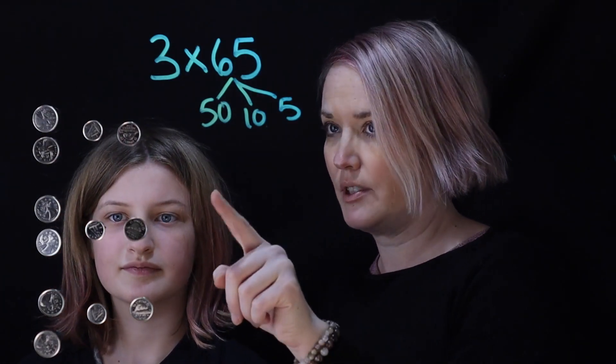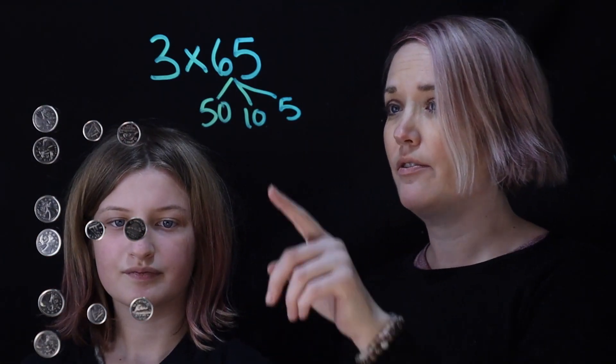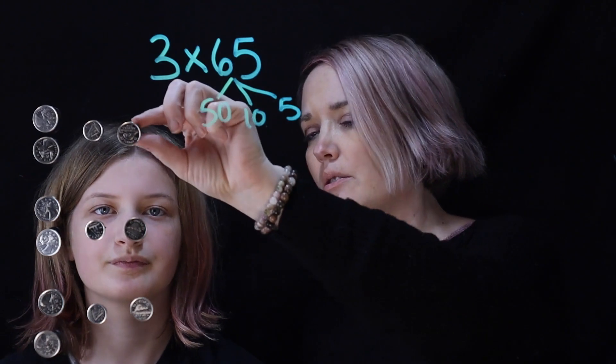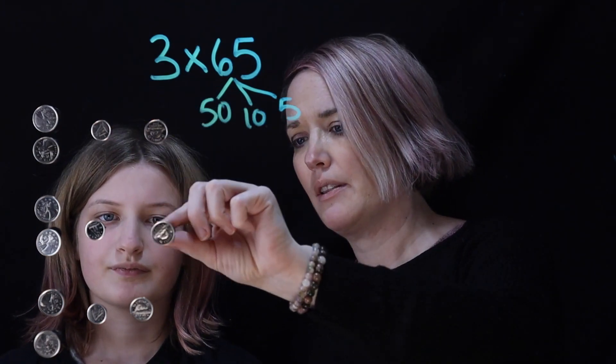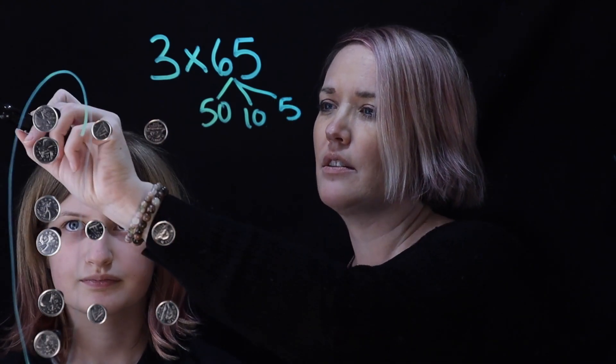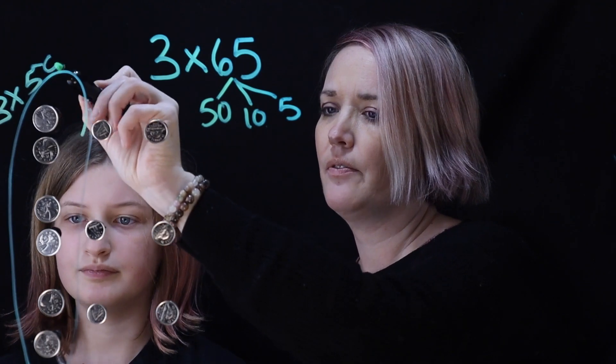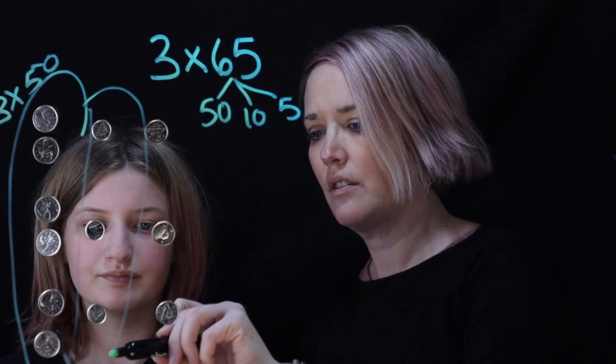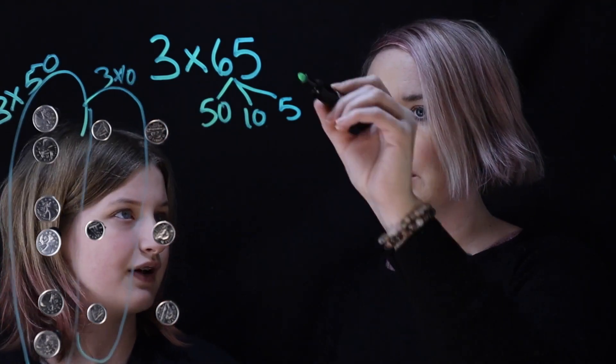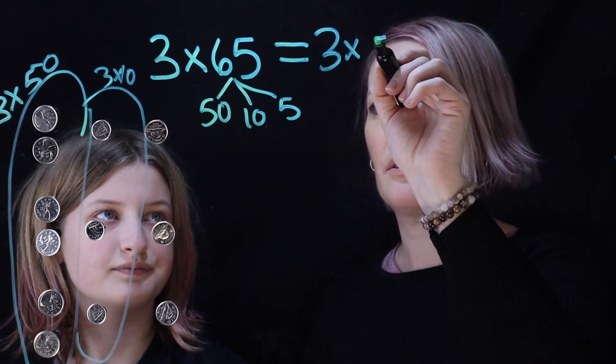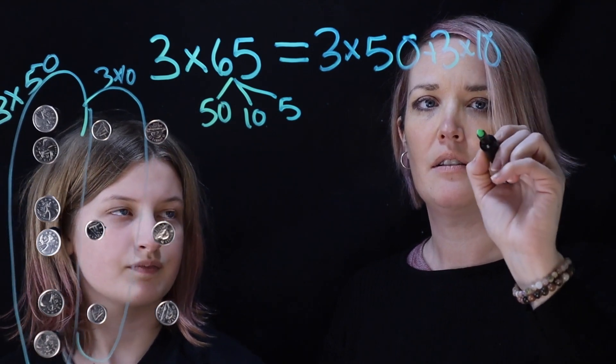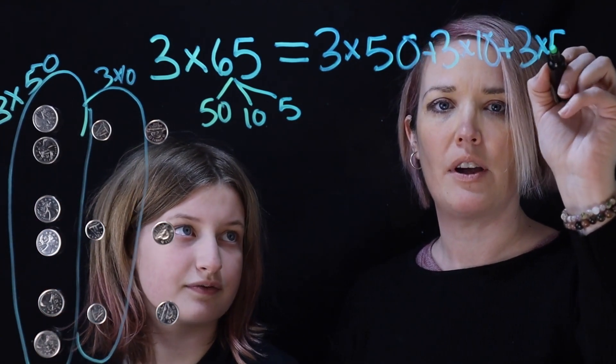So one group of 65, two groups, three groups, and so to figure out three times 65 we have to figure out how much in total there is here. But you said you want to split it this way. So I'm just going to separate things a little bit so that this is 3 times 50. This is 3 times 10 and that's 3 times 5. So let's write that out. So 3 times 50 plus 3 times 10 and then plus 3 times 5. Perfect.